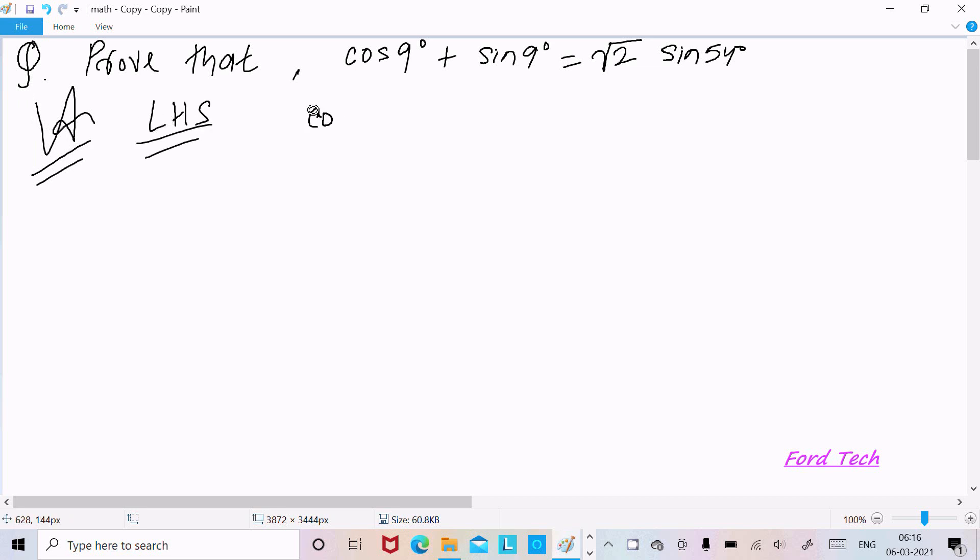Here cos 9°, here sin 9°. So if I multiply with √2 on the numerator and on the denominator...